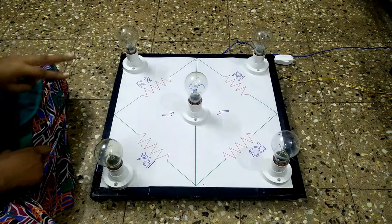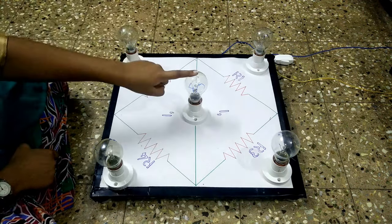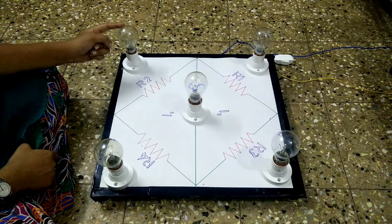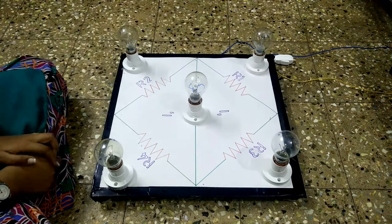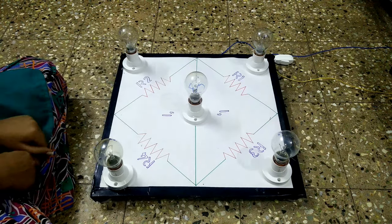I have used three types of bulbs: 100 watt bulb, 60 watt bulb, and 40 watt bulb. The 100 watt bulb has a resistance of 38 ohms, the 60 watt bulb has 66 ohms, and the 40 watt bulb has 97 ohms.